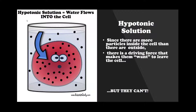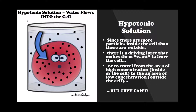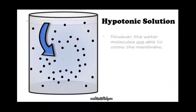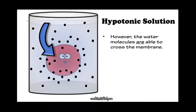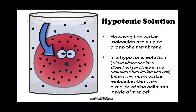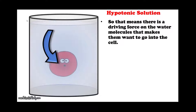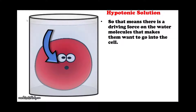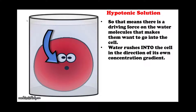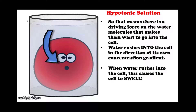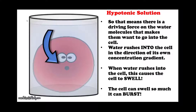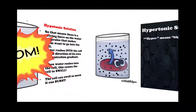Since there are more particles inside the cell than outside, there is a driving force that makes them want to leave the cell — to travel from the area of high concentration inside the cell to an area of low concentration outside the cell — but they can't. However, the water molecules are able to cross the membrane. In a hypotonic solution, since there are fewer dissolved particles in the solution than inside the cell, there are more water molecules outside the cell than inside. So there is a driving force on the water molecules to go inside the cell. Water rushes into the cell in the direction of its own concentration gradient, causing the cell to swell. The cell can swell so much it can burst.